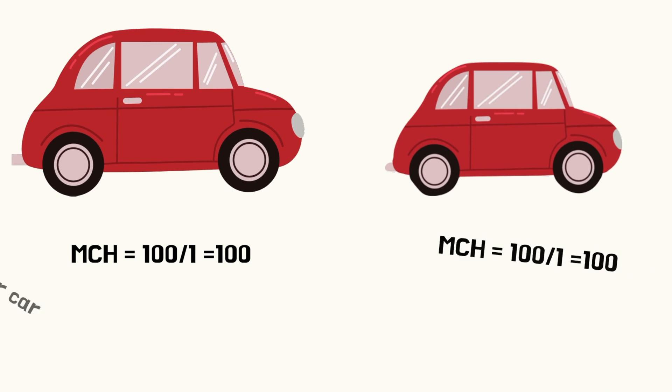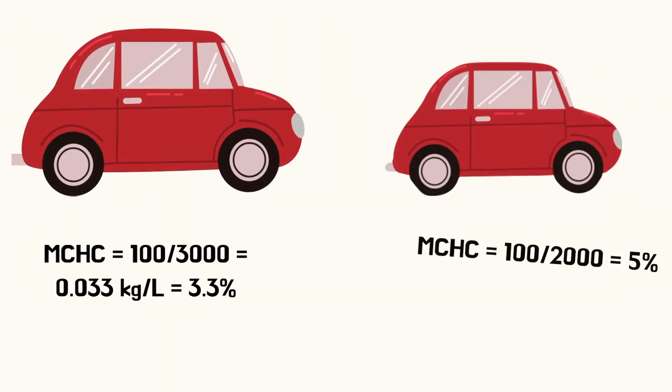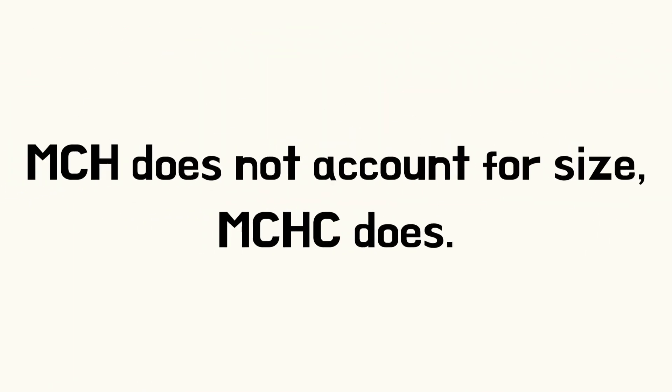The MCH for both cars will be the same since they're both carrying the same weight of passengers. On the other hand, the MCHC would differ since it's a ratio between the weight of the passengers, or the hemoglobin, and the volume of the car, or the volume of the RBC. Based on this, we now know that MCH does not account for size, while MCHC does.